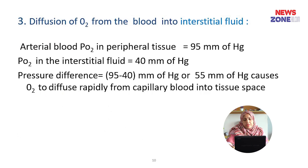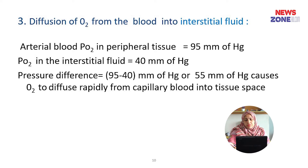Number 3 is diffusion of oxygen from the blood into the interstitial fluid. Arterial blood partial pressure of oxygen in peripheral tissue is 95 mmHg, and partial pressure of oxygen in the interstitial fluid is 40 mmHg. The pressure difference is 55 mmHg, which causes oxygen to diffuse freely from the capillary blood into the interstitial space.